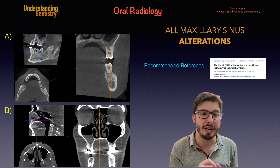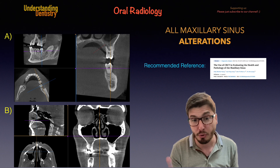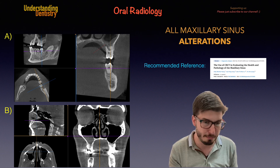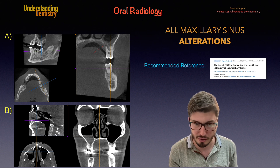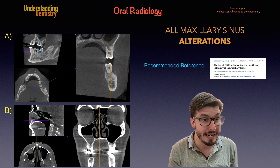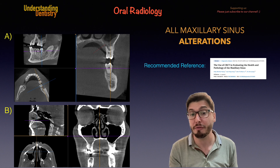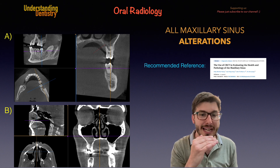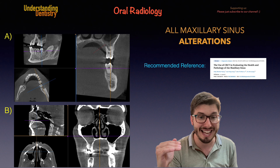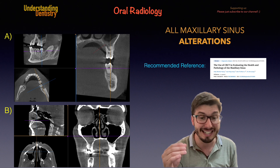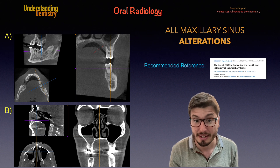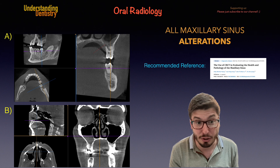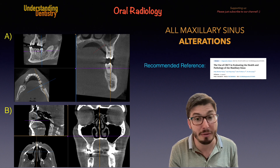Those are examples of sinus opacification. Most of the sinus alterations will be sinus opacifications. Now on the letter B we have a different type of sinus opacification. The line of the opacification is now flat, showing that that's liquid — so that's usually acute infection on the sinus. The alteration is on the left side of your screen, which is the right side of the patient.